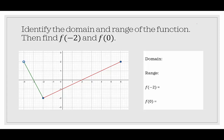Let's look at some examples. Here's f of x. For the domain, I see that we have an open circle here, which indicates this particular point is not part of the function — it's the endpoint but not included. That point is negative 4 comma 2, and since it's the furthest left, it's the least value. We don't include negative 4, so we use a parenthesis. Then it goes all the way to the point 6 comma 2, which is a closed circle indicating that point is included, so we use a bracket. The domain is (−4, 6].